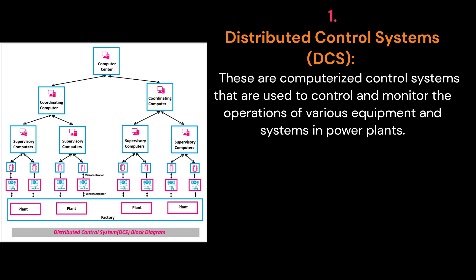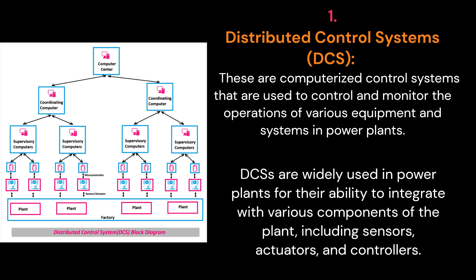1. Distributed Control Systems, DCS. These are computerized control systems that are used to control and monitor the operations of various equipment and systems in power plants. DCSs are widely used in power plants for their ability to integrate with various components of the plant, including sensors, actuators, and controllers.